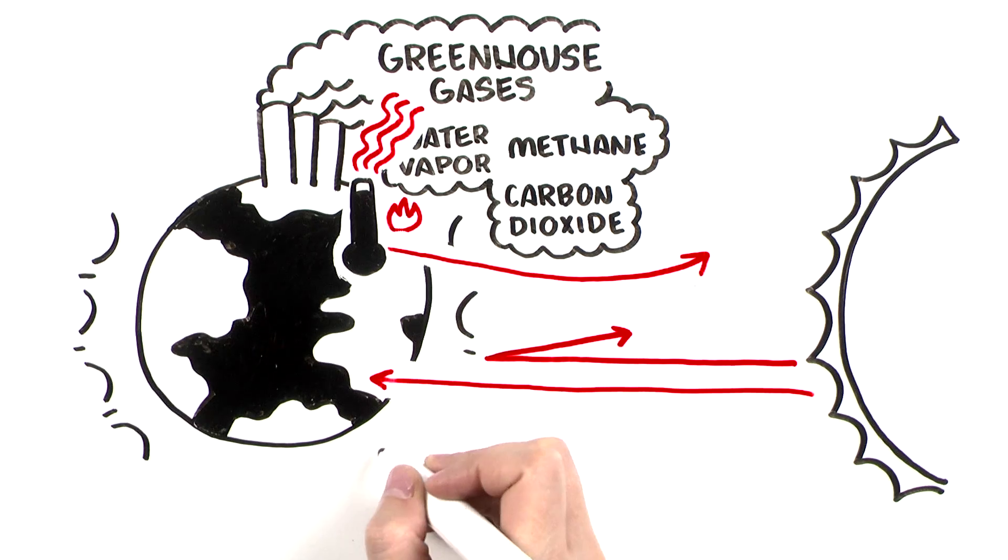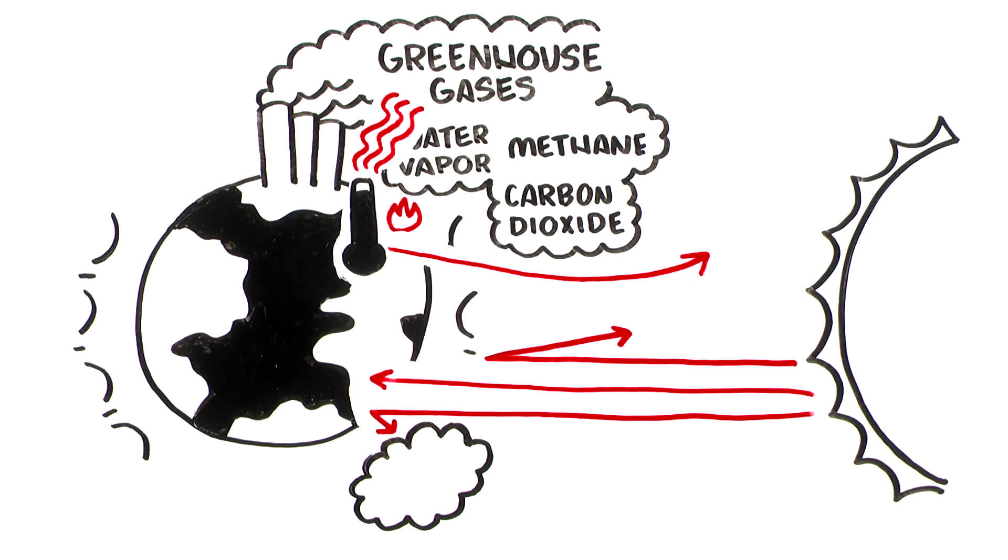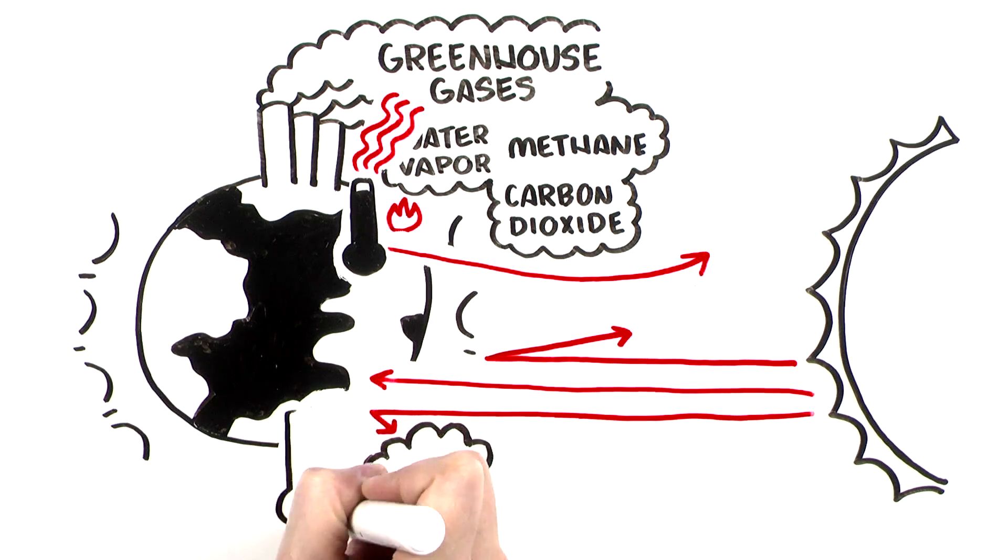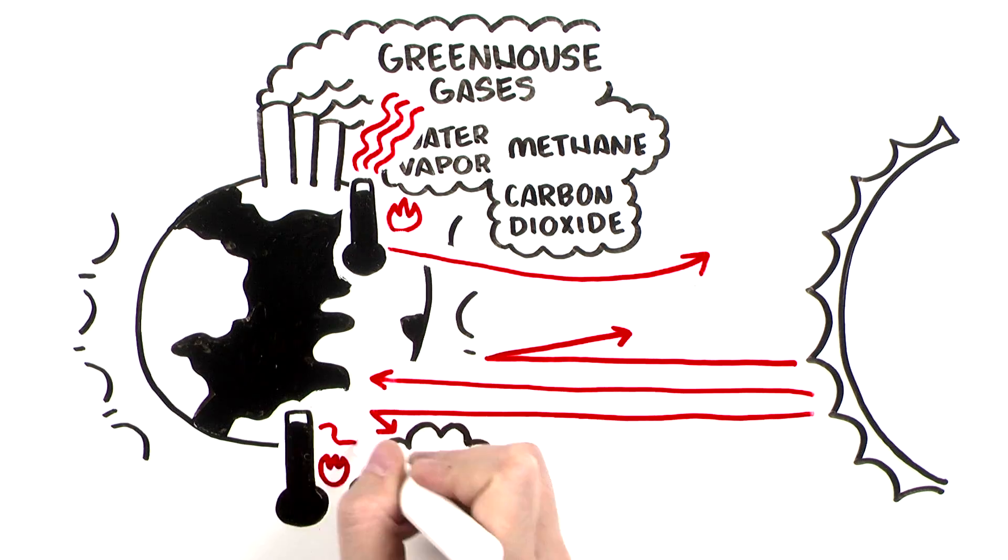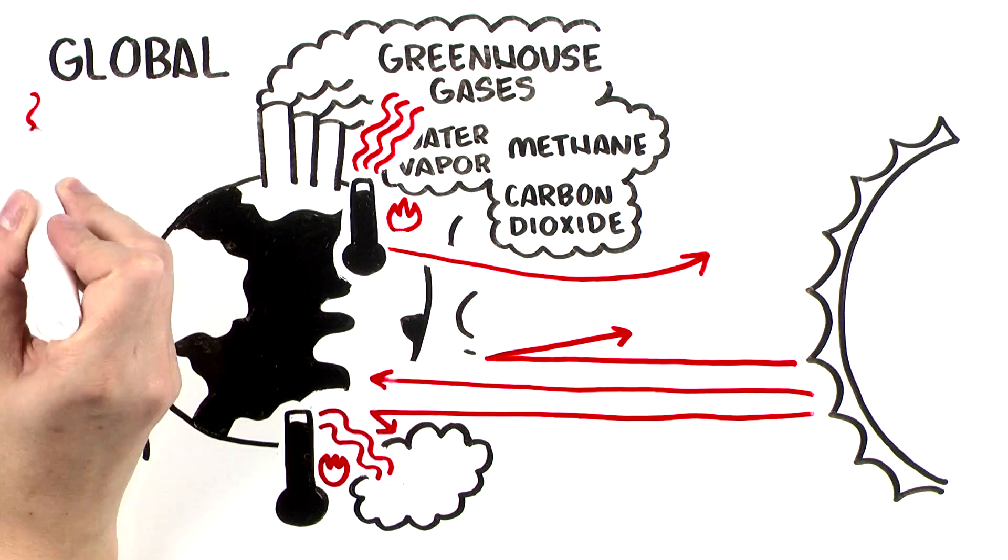But some of that heat is absorbed again by greenhouse gases and warms the atmosphere. The more these gases accumulate in the atmosphere, the more heat gets trapped and the warmer the world becomes. That's global warming.